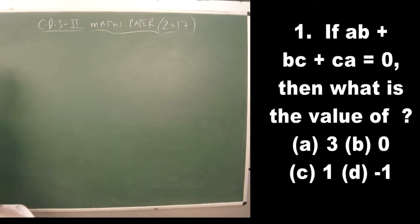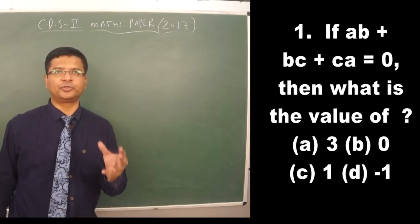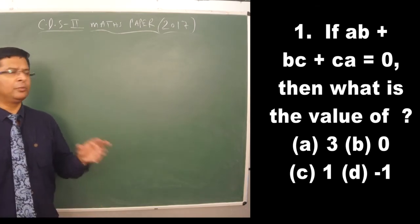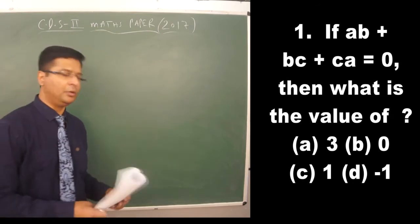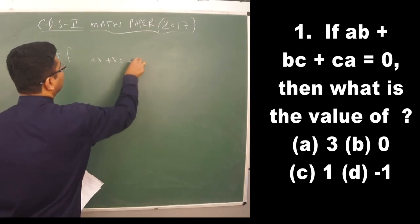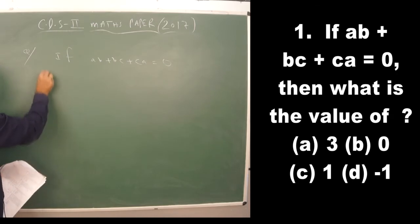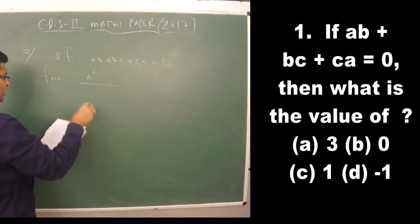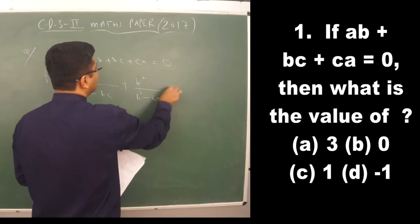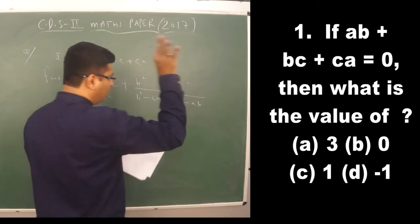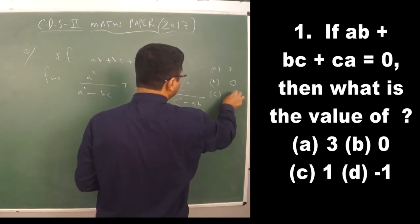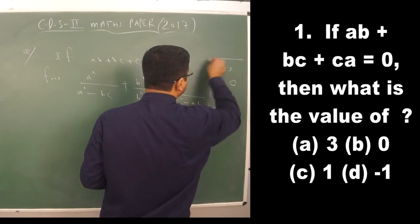Now a question from number system: if ab + bc + ca = 0, find the value of a²/(a²−bc) + b²/(b²−ca) + c²/(c²−ab). The options are: A) 3, B) 0, C) 1, D) −1.